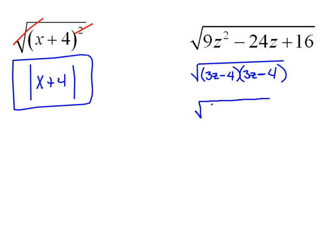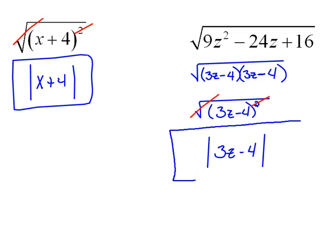Now, we could rewrite this as 3z minus 4 quantity squared because this was a perfect square trinomial. And now we can take the square root. Squaring and square rooting undo each other. So our answer would be 3z minus 4. But because we have a variable, we must use the absolute value bars to ensure that it will be positive, no matter what.